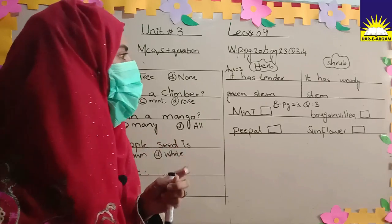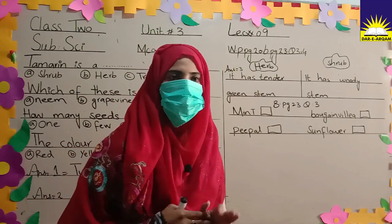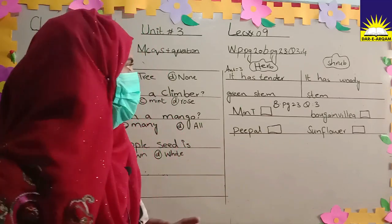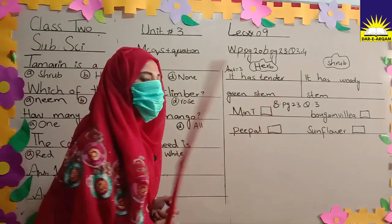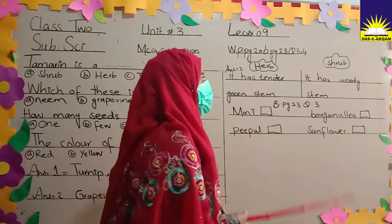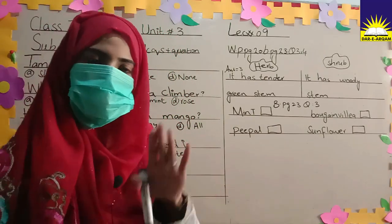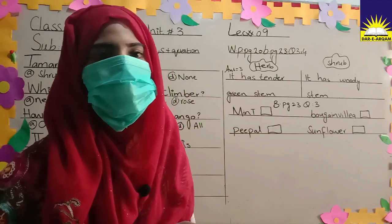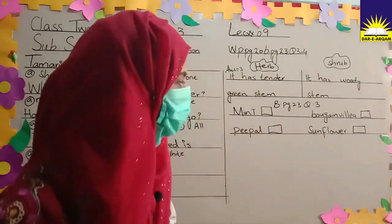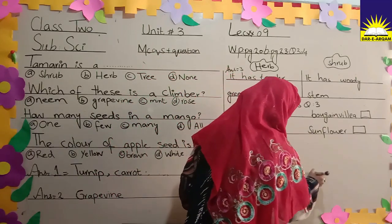Cup B, which had a plant without root, is dry. Now today's topic covers MCQs and questions. In this chapter we have learned about plants and their types. Today we have to discuss what plants are, and the types: herbs, shrubs, and trees. Herbs are small plants with tender green stems, shrubs have woody stems, and trees are the largest plants with the longest lifespan.